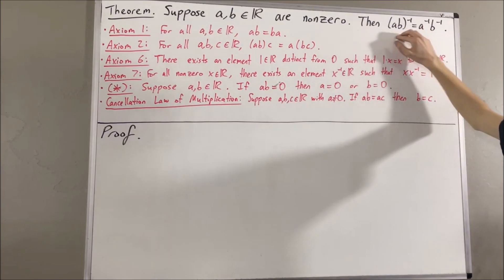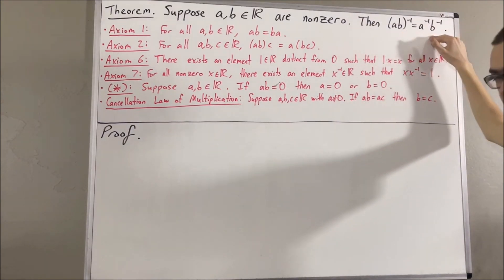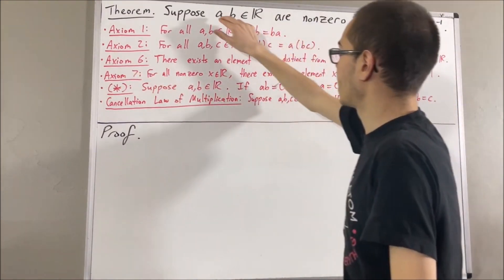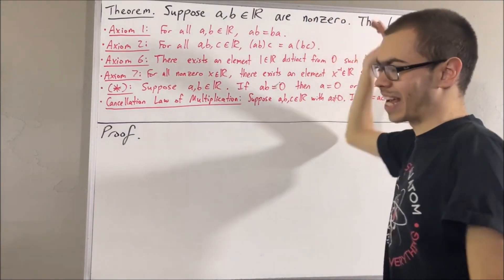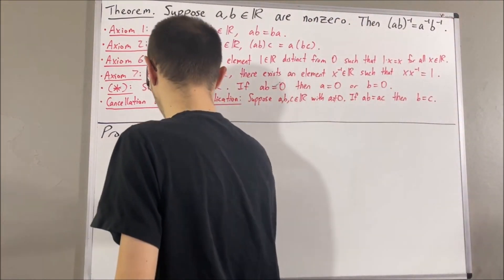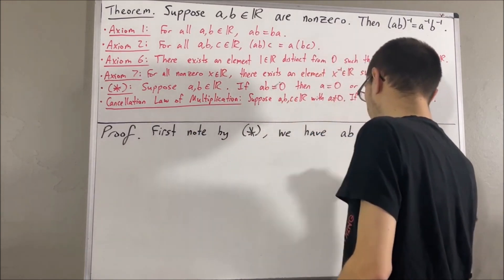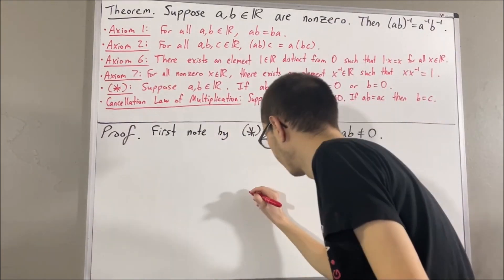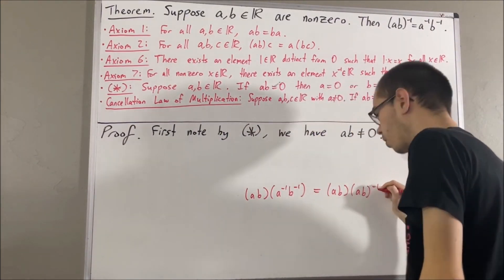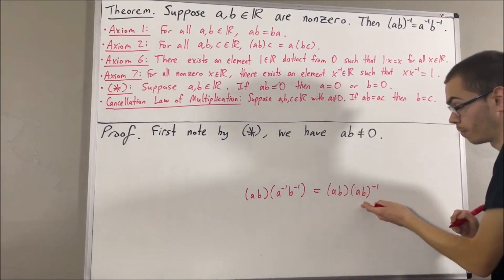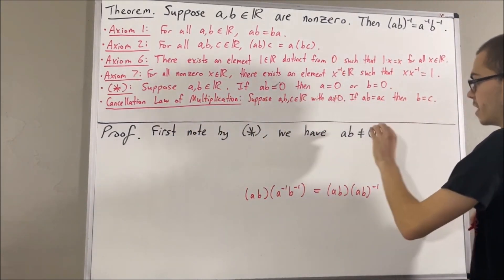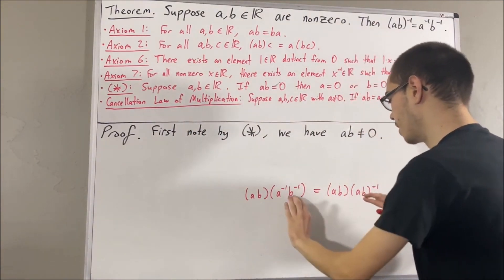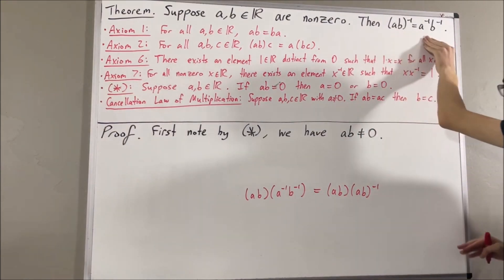So this statement makes sense. Now let's prove it. To start, let's note by star that since A and B are not equal to 0, that tells us AB is not equal to 0. To show that the reciprocal of AB equals the reciprocal of A times the reciprocal of B, the idea is: we can show that AB times the reciprocal of AB equals AB times the reciprocal of A times the reciprocal of B, and then apply the cancellation law of multiplication — since AB is not equal to 0 — to cancel out the ABs.